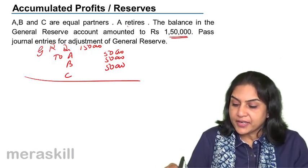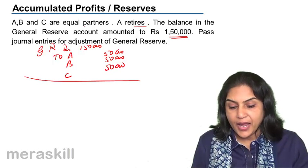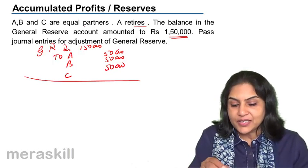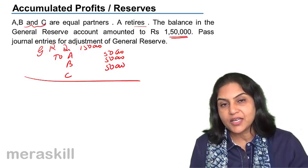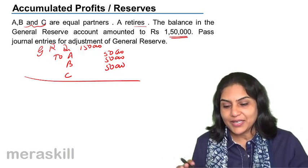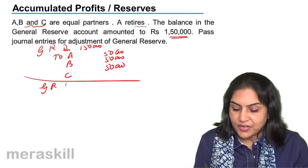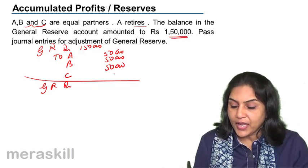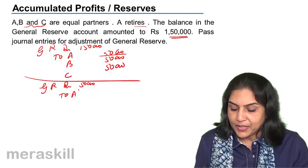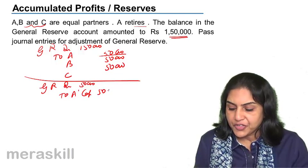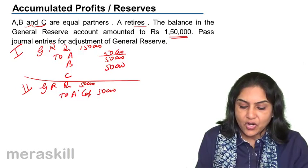Since A has retired and nothing is mentioned about the remaining partners' ratio, it is assumed that B and C will continue to share profits equally. In such a case, we can also pass the alternative entry: general reserve account debit with only A's share — $50,000 — to A's capital $50,000. This was alternative 1 and this is alternative 2.